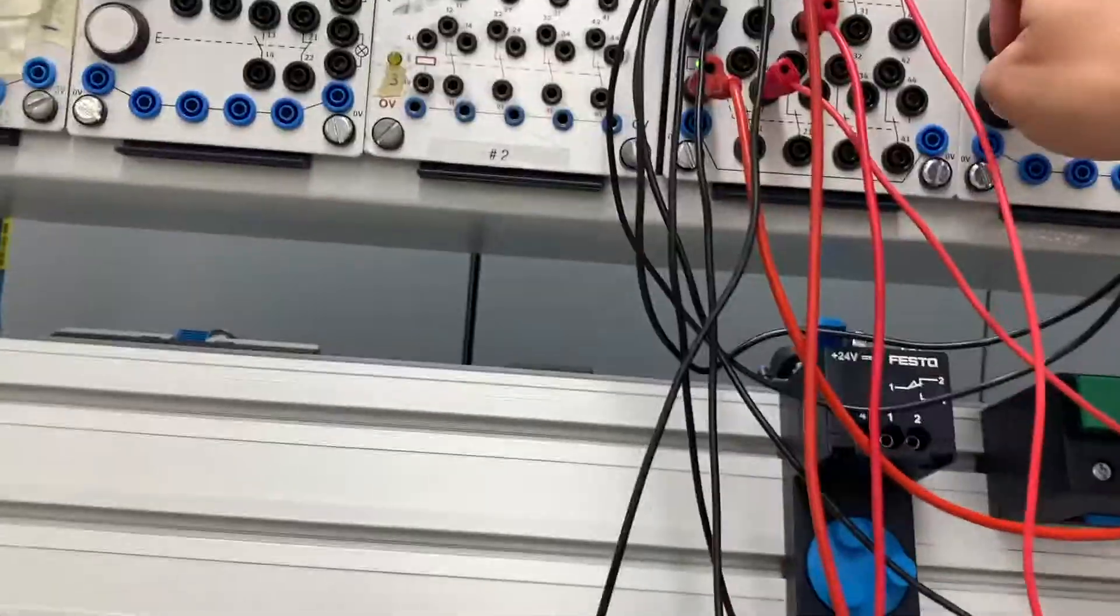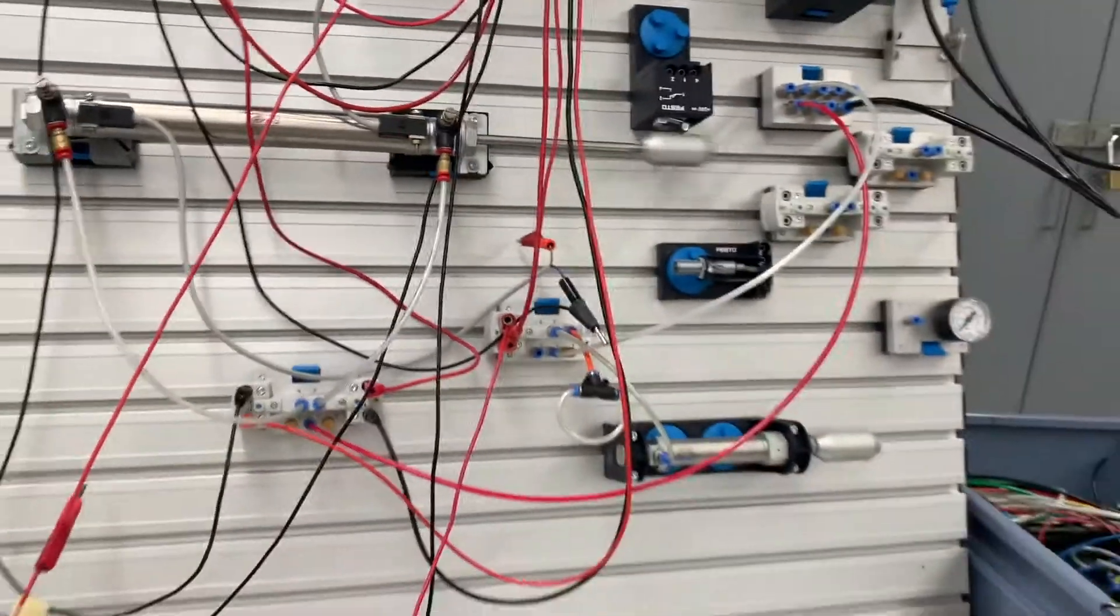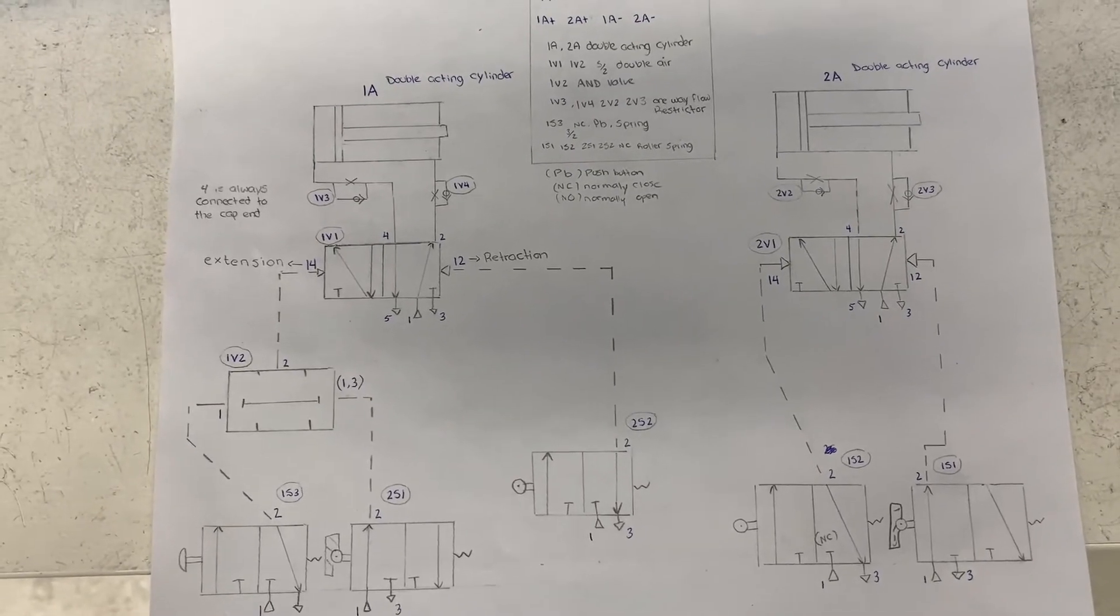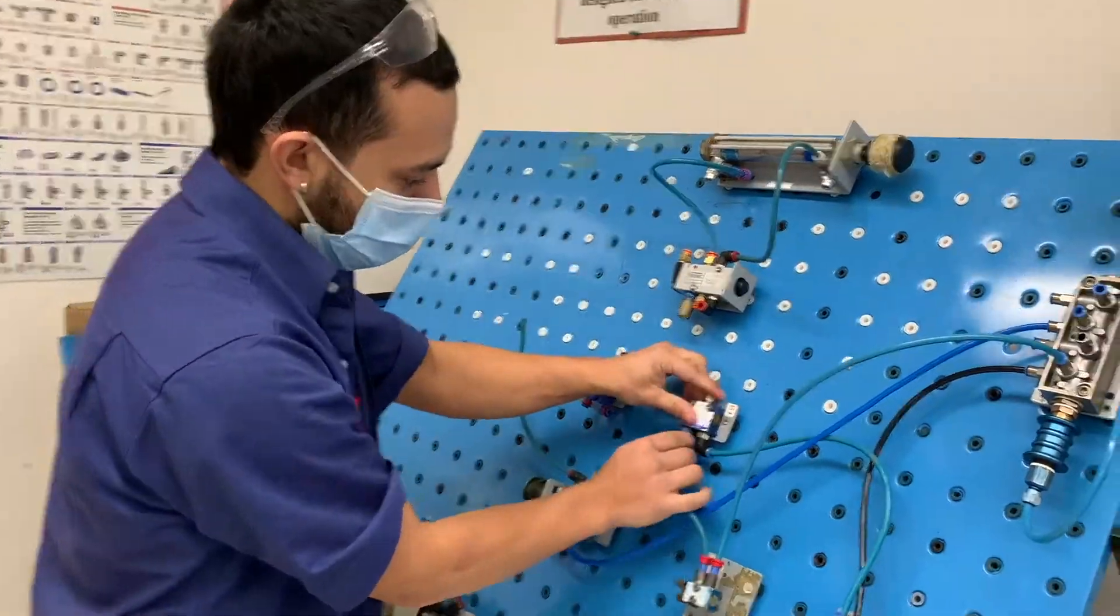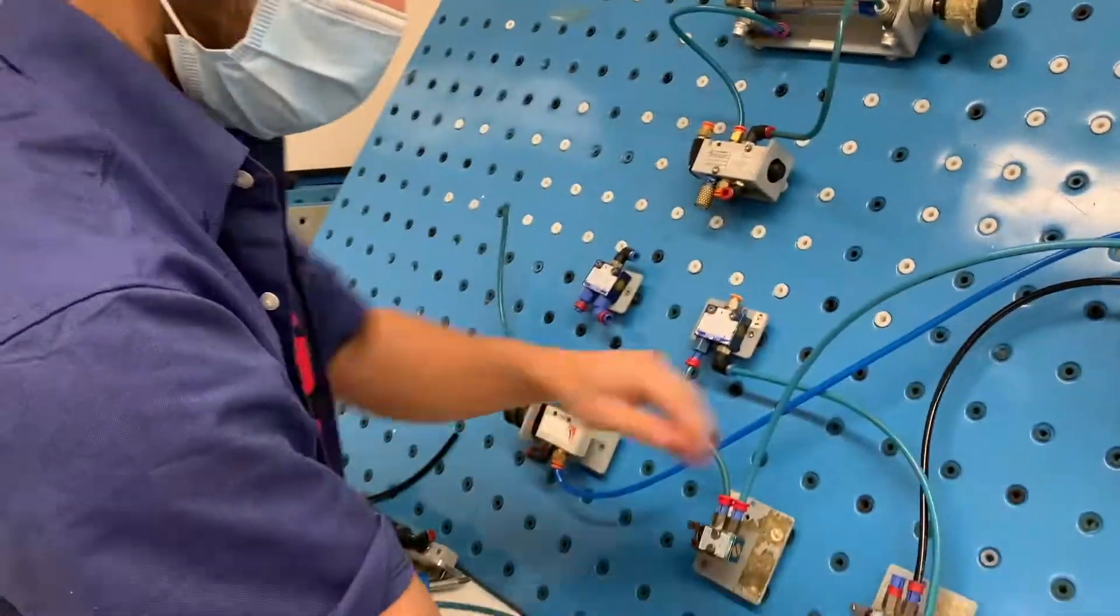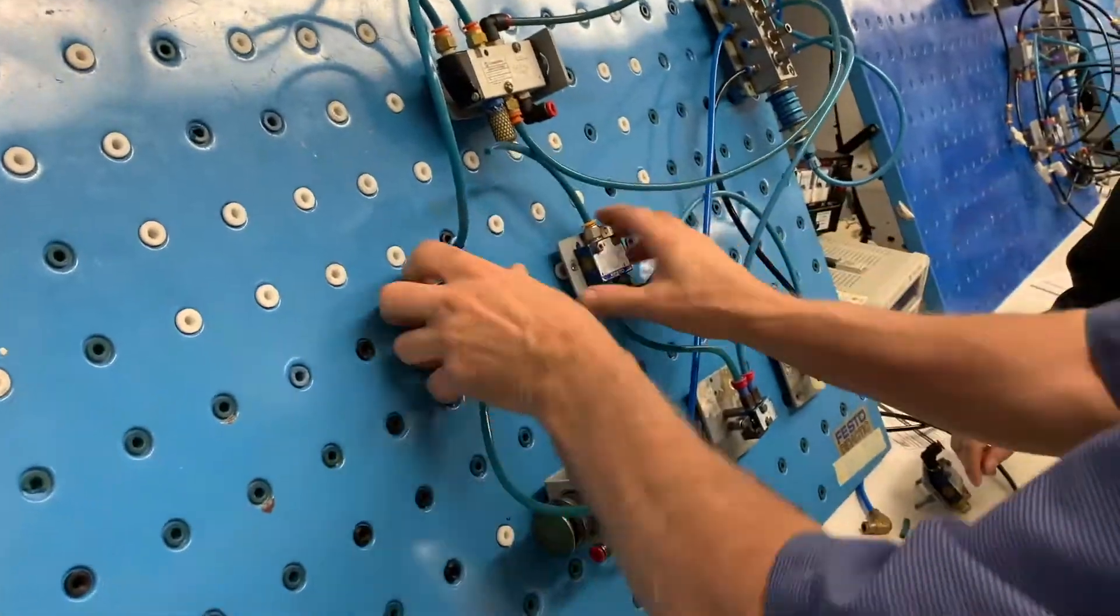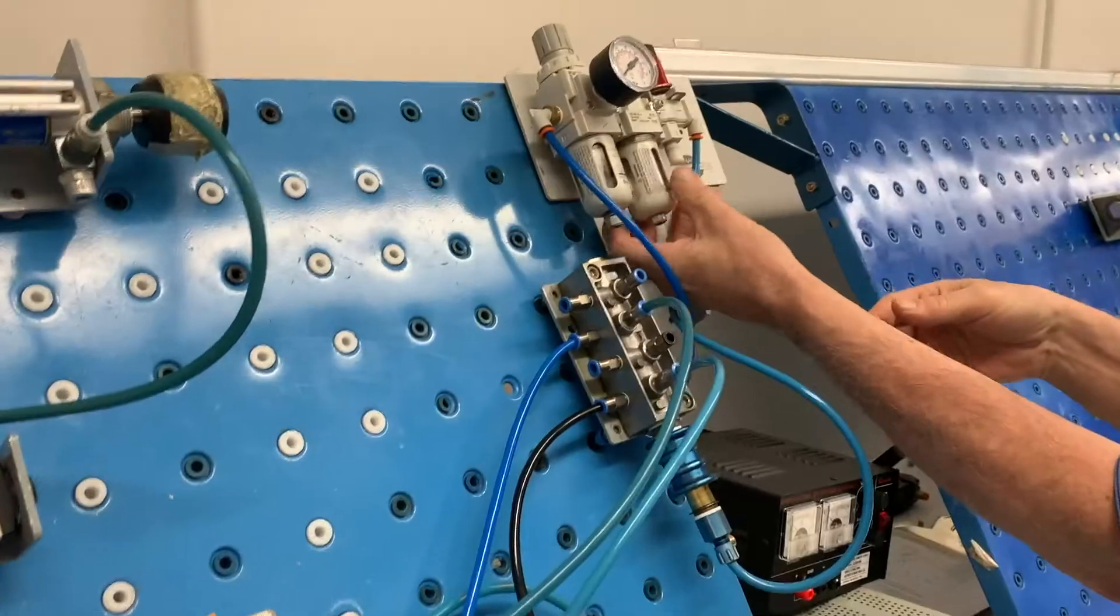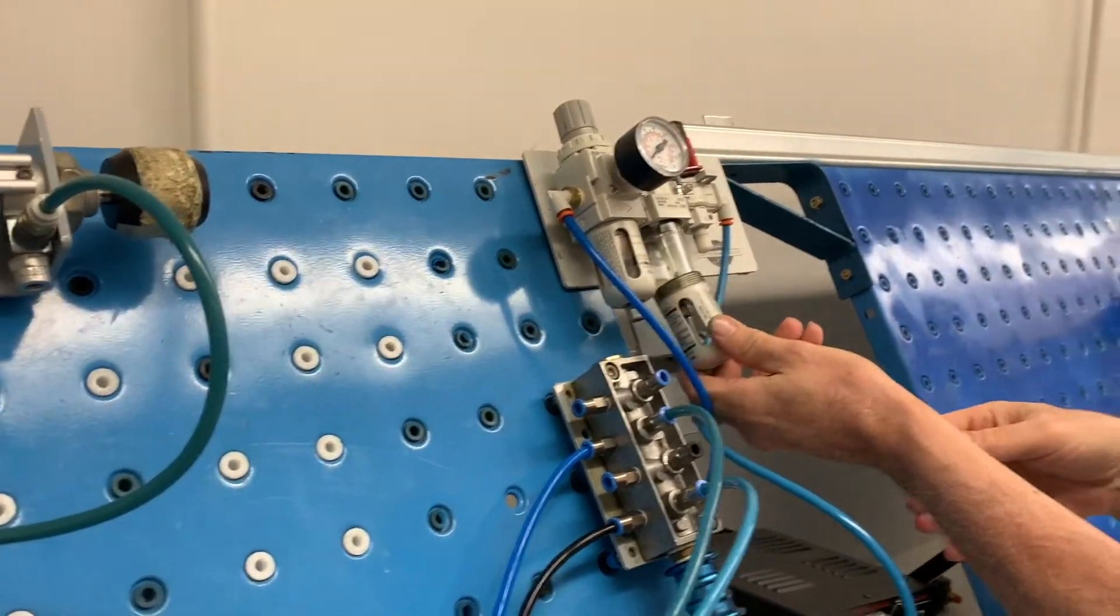This is our timer. When we press our push button, the rod should expand. Oh, maybe we don't have any air. So this is the diagram I drew to actually make it in the real circuit board.